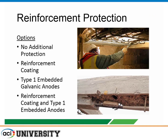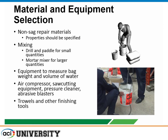Once everything is clean, there are options for reinforcing steel treatment. You can use no additional protection, relying on the alkaline repair material itself to protect the steel. In some cases, specifiers will require coatings to the reinforcement — follow the manufacturer's recommendation and apply before the repair material. You can also look at galvanic anodes within the repairs, or a combination of a galvanic anode and a reinforcing coating. Review the project specifications to see what has been called out.